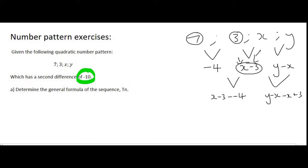We can't really go any further than that. However, they have told us that the second difference, the second difference is always this row over here, is minus 10. And remember, because it's a quadratic number pattern, we know that this term is also the same as this term over here, and both of those should equal minus 10.